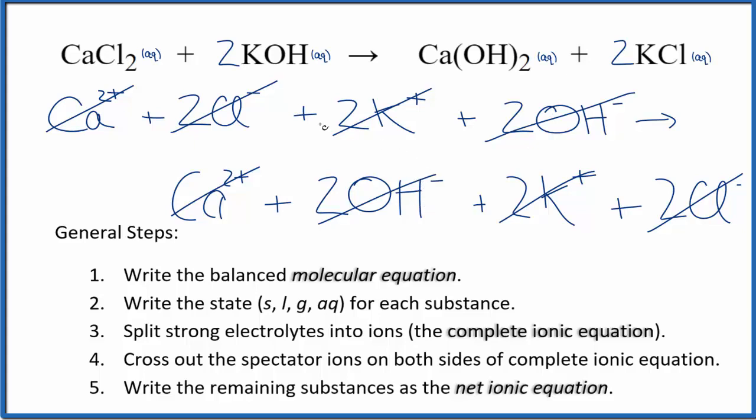This is Dr. B with the net ionic equation for CaCl2 plus KOH, calcium chloride and potassium hydroxide. But there's no reaction because the ions we start with, they're the same as the ones we finish with. Thanks for watching.